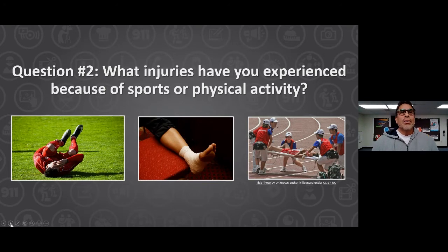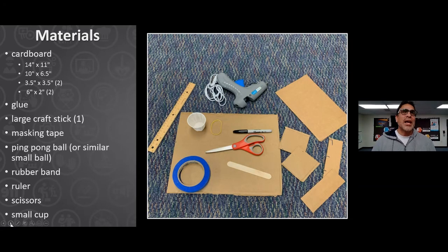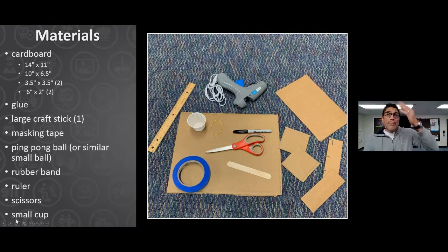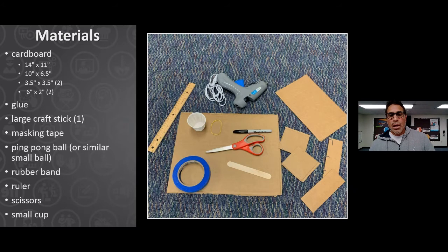This brings us to our build! On the screen you can see the materials you'll need: some cardboard cut to specific sizes, Elmer's glue, a large craft stick, masking tape, a ping pong ball, a rubber band, a ruler, scissors, and a small cup. Those sizes don't have to be exact — just close and it will work. I'm going to use a glue gun so it sticks faster and you can see a more finished product, but Elmer's glue will work just fine.